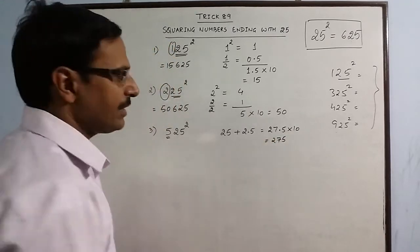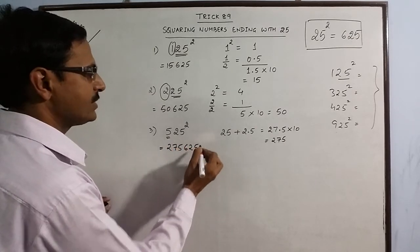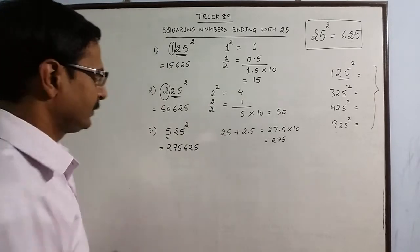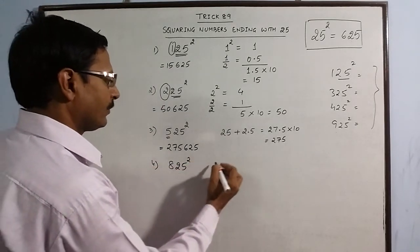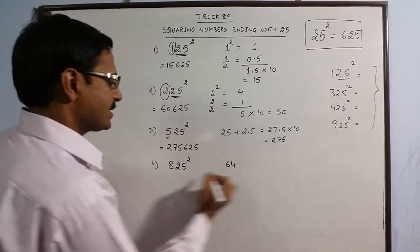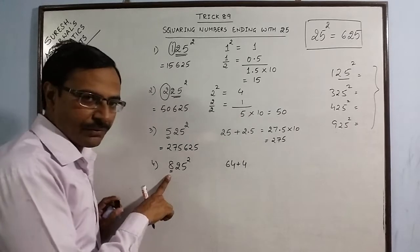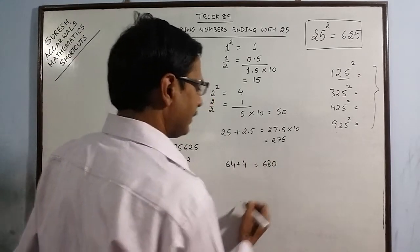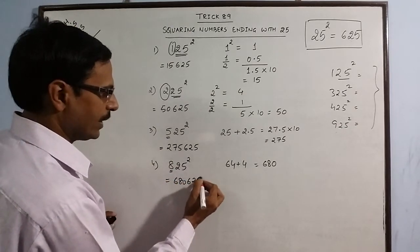So 275 followed by 625 is your required square of 525. Take more examples. Say 825 square. 8 square is 64 plus 4 because half of it is 4. 68 multiplied by 10. 680625 is your required answer.